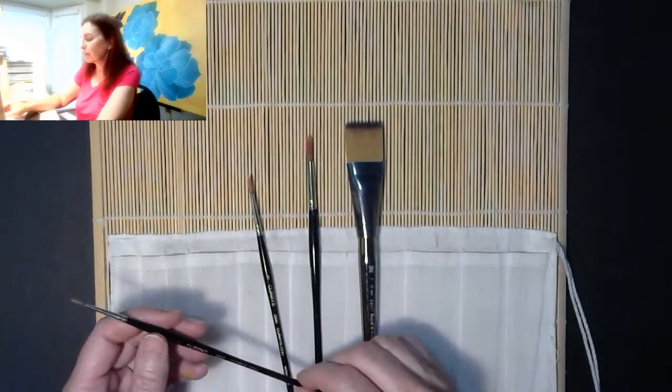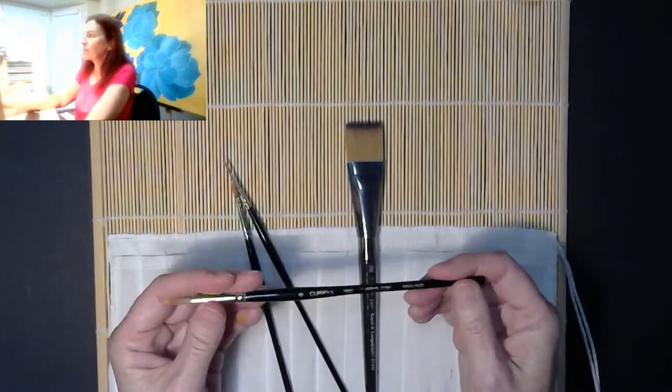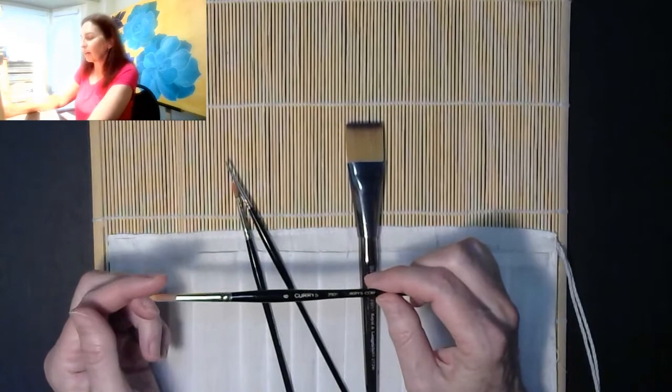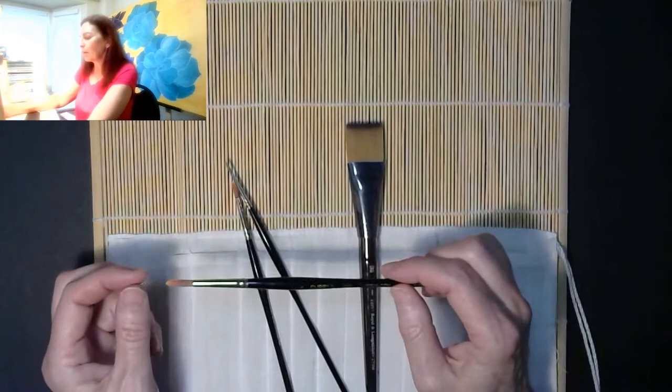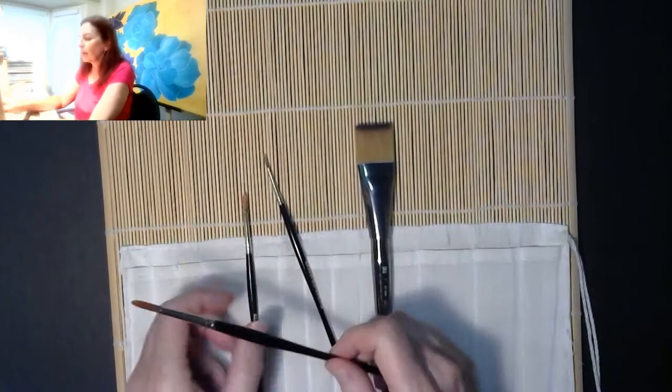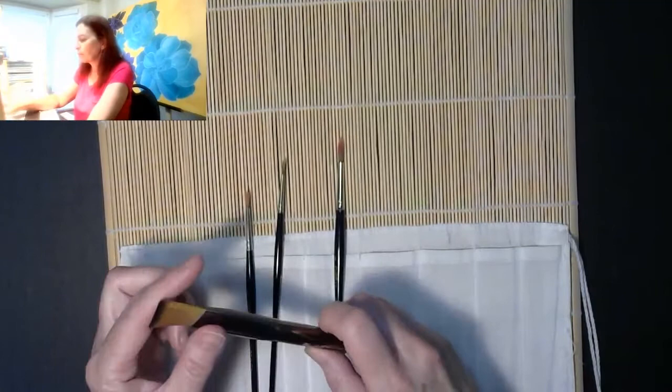Now my round brushes are all Curry's brand in this case. This is a fairly inexpensive brand. What you're looking for in a watercolor brush is first of all for it to say that it's a watercolor brush, and not, especially not an oil brush or an acrylic. Acrylic brushes can be okay, but if it says it's a watercolor brush, then that's much more reliable. What you're looking for is for it to come to a nice point and be soft and flexible.